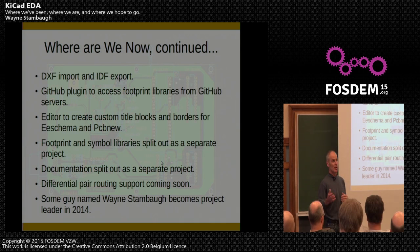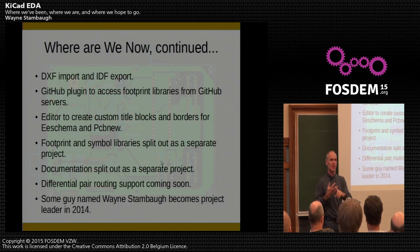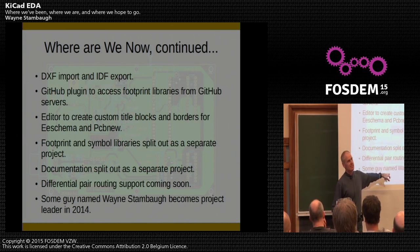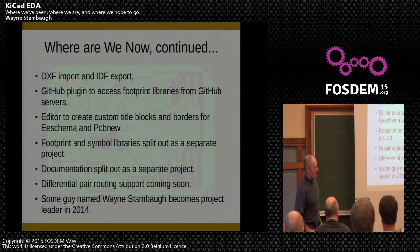The documentation and libraries are split out as separate projects. A total KiCad install right now is running around 750 megabytes when you count all the libraries, 3D models, schematic libraries, KiCad binaries, and documentation — it's quite a big project. Coming soon: Tom is working on differential pair routing, so those of you doing transmission lines and high-speed stuff, that's something you'll be interested in. And late last year, someone named Wayne Stamball became the project leader — so this is where we are right now.